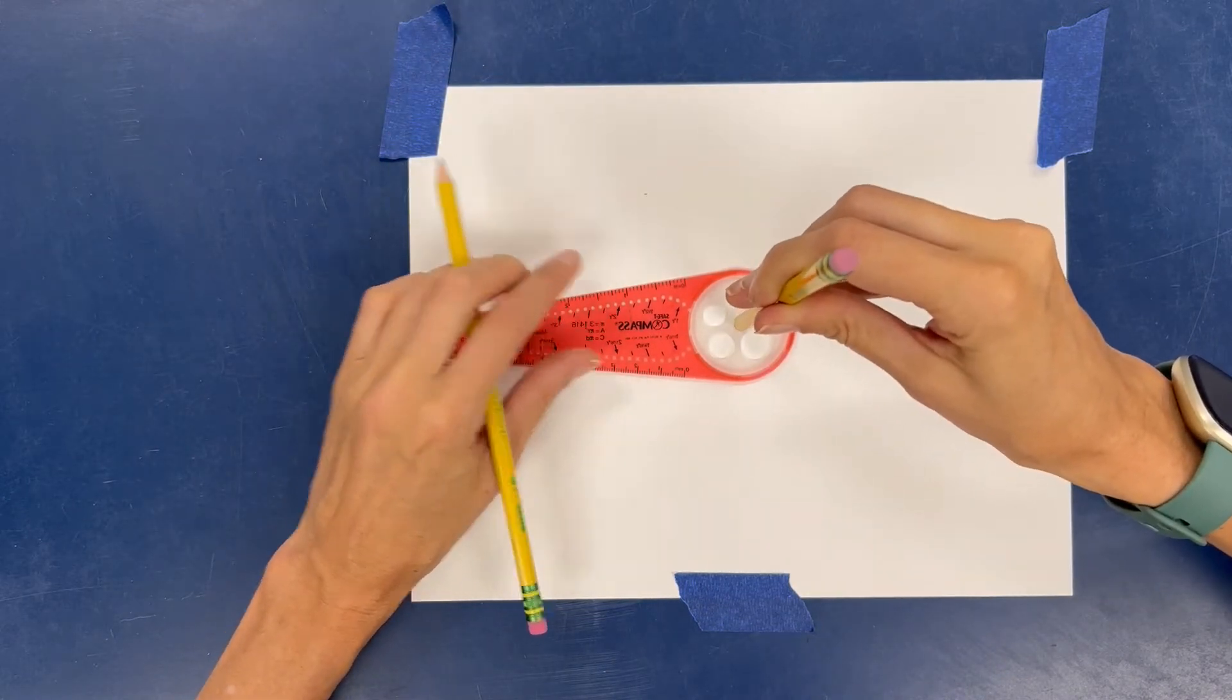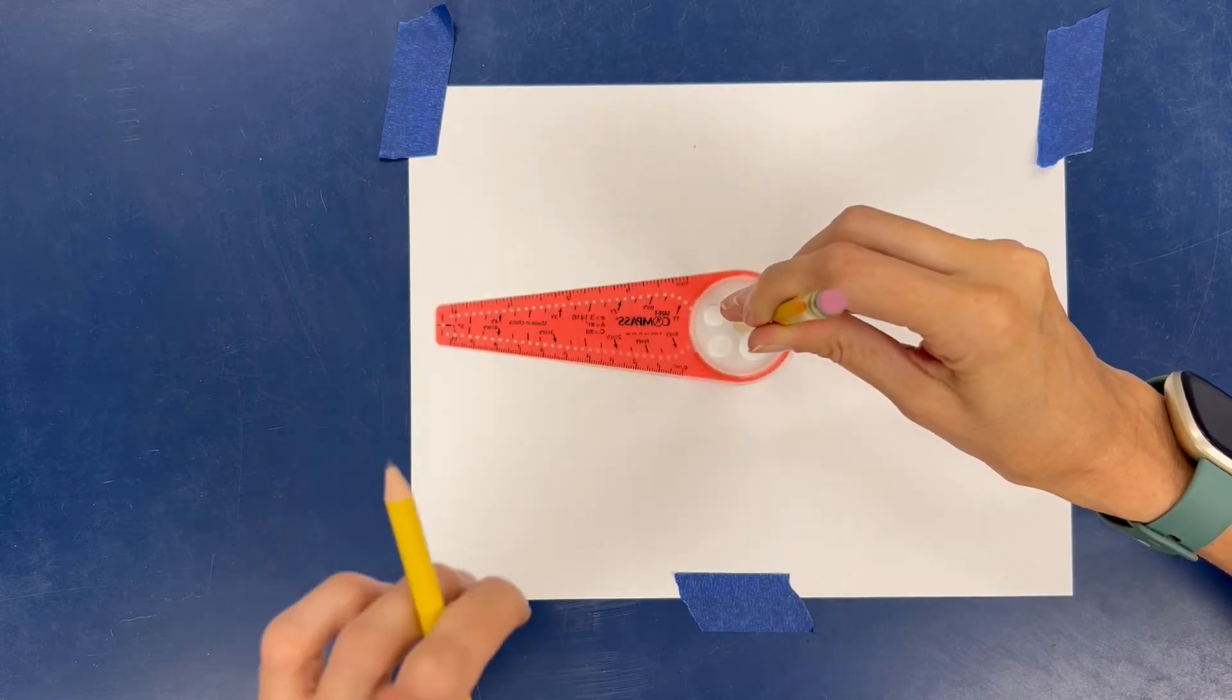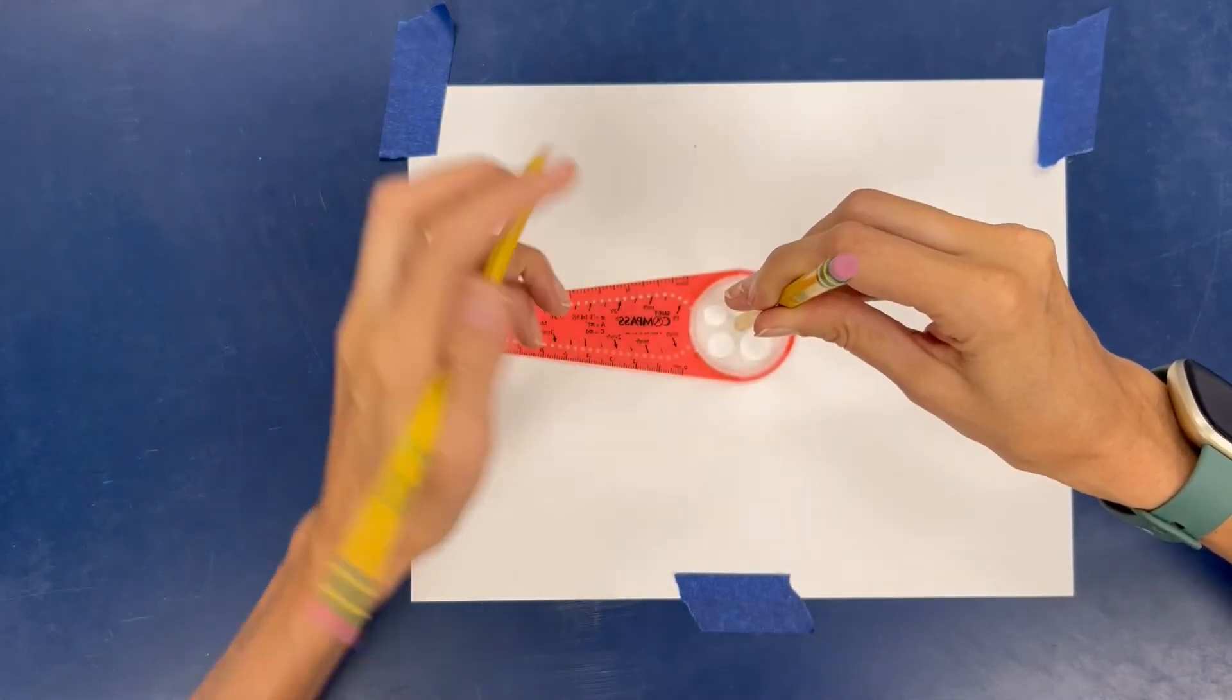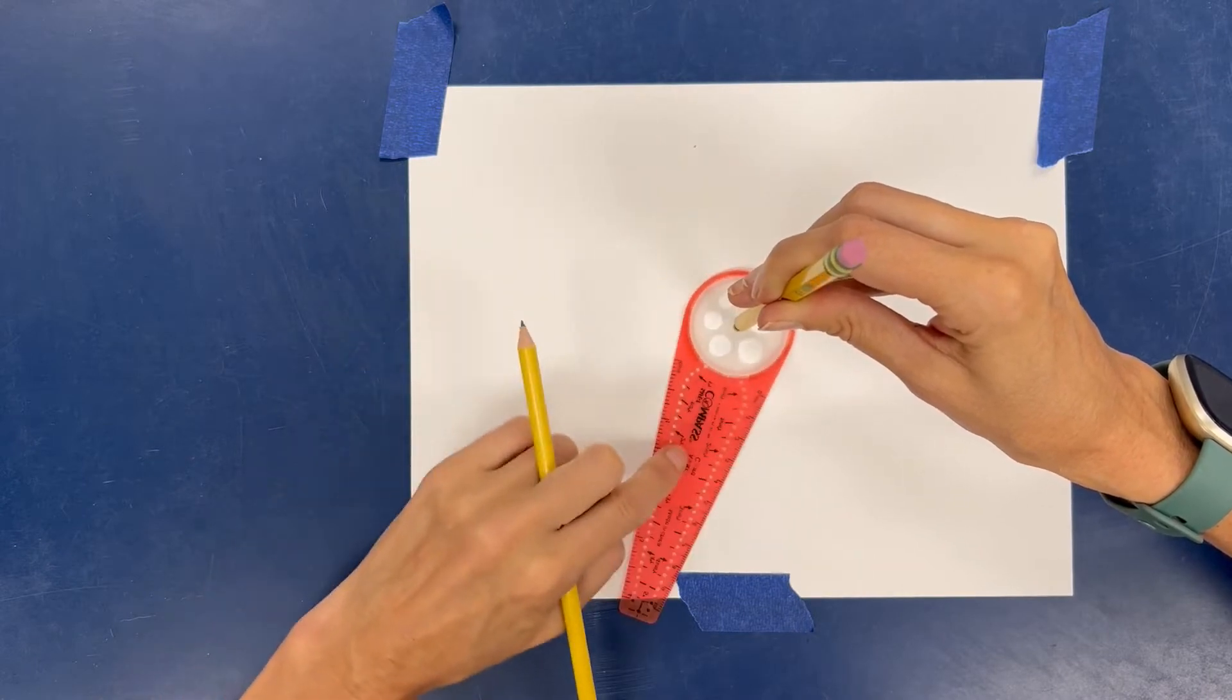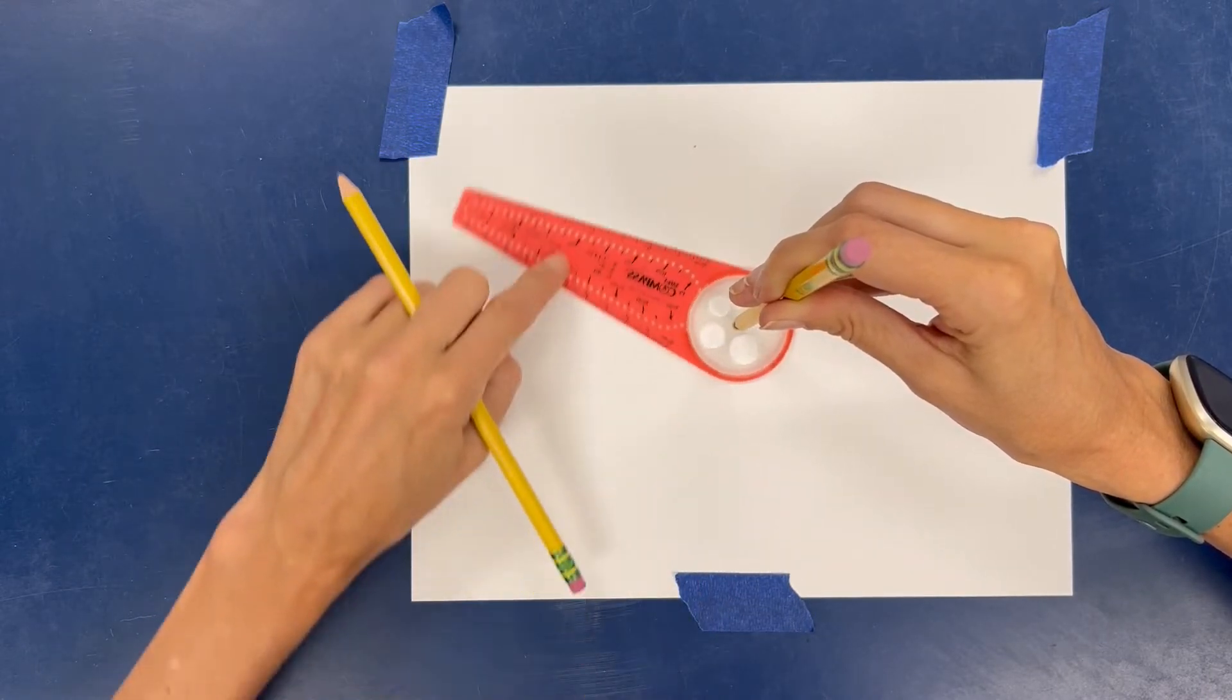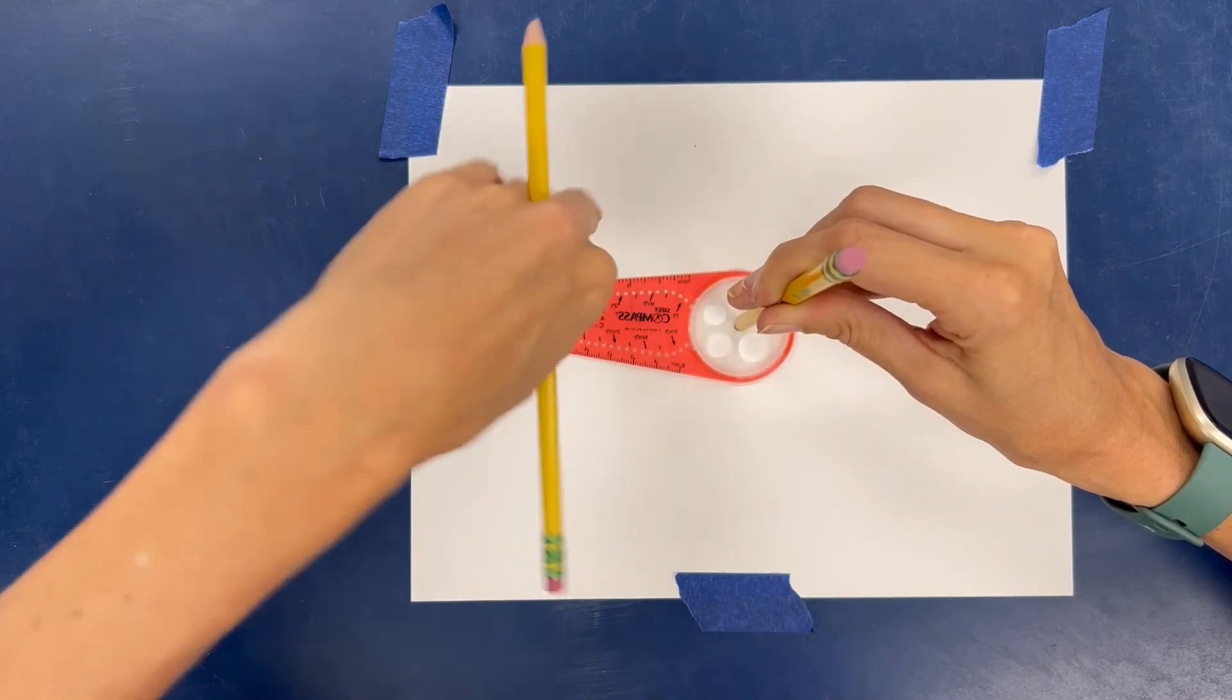If I don't press hard this will move. I mean it moves this way which is good but I don't want this part to move. This part has to stay absolutely still, so that way when I draw around it will keep us in that circular pattern.